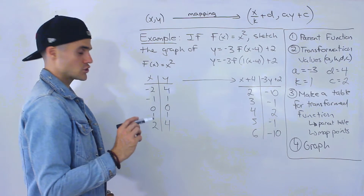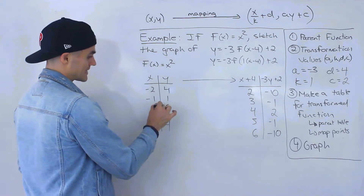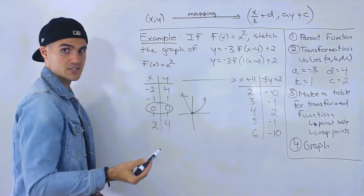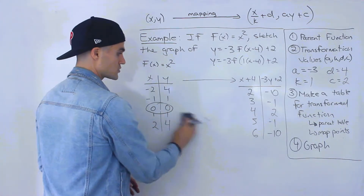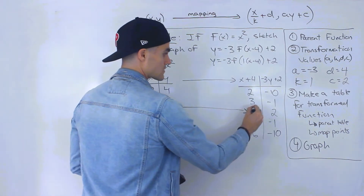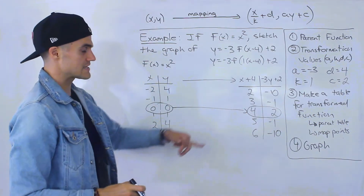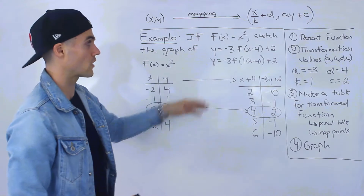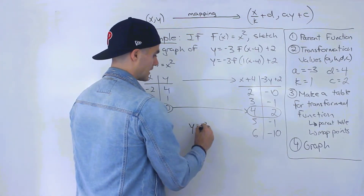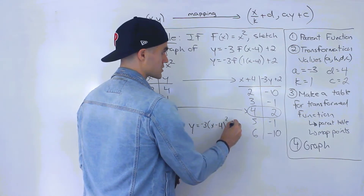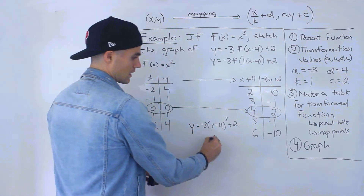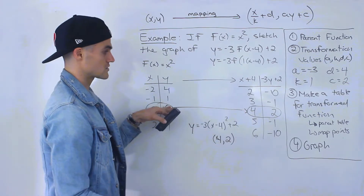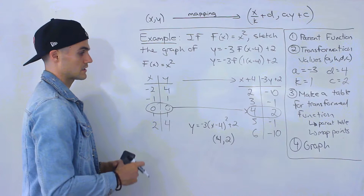Notice that the point (0, 0) represents the vertex for the parent function x squared, and it got transformed to (4, 2). So (4, 2) is going to be the vertex for our transformed graph. If we combine the function, we get negative 3 times (x minus 4) squared plus 2 — notice this is in vertex form. From grade 10, vertex form confirms (4, 2) is the vertex, which matches what we got when we transformed (0, 0). It all corresponds nicely.